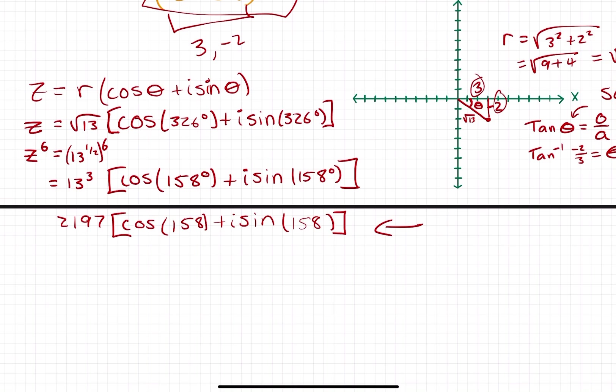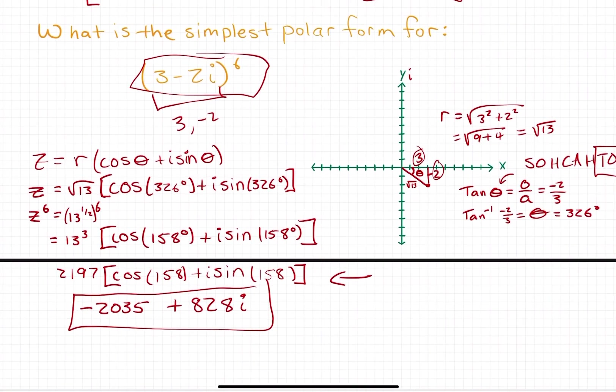If you plug that all into a calculator, after you calculate cosine 158 and multiply it by 2,197, you'll get negative 2,035. Plus the sine of 158 times 2,197 will give you 828i, and this is your simplified form in rectangular form.